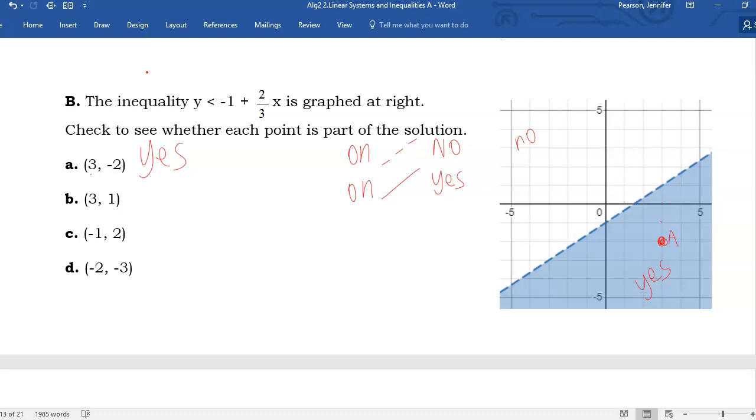3 positive 1 from the origin, 3 to the right, 1 up. Point b is on a dotted line. A dotted line is a no. If it had been a solid line, that would have been a yes, right? If we had had an or equal to, but we don't, so it's not included.